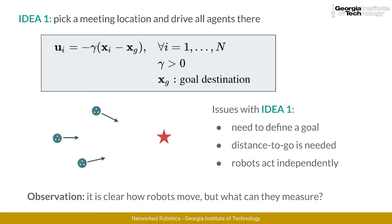When proposing the solution we just described, we implicitly made a few strong assumptions. First, we need to define a global position for the robots to meet. The assumption we made here is that we can somehow share this meeting position to the robots, which requires some communication capabilities. However, in practice, this is a restrictive assumption. But remember that as long as the robots meet, the problem is solved, regardless of their final location.